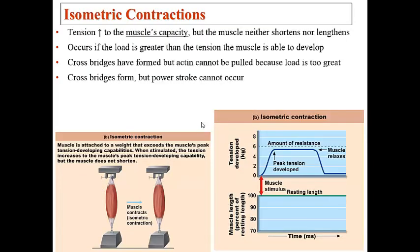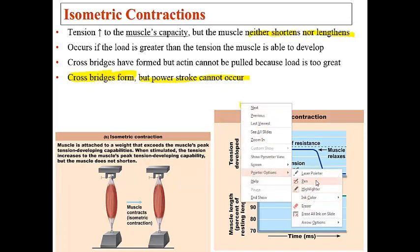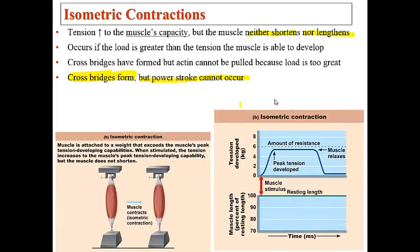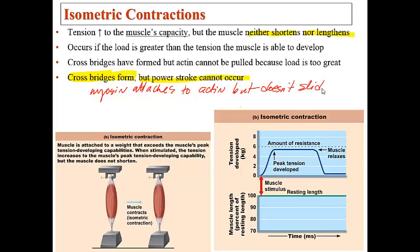Isometric contractions are those where the muscle neither shortens nor lengthens. These occur when crossbridges form but the power stroke does not produce sliding — like the myosin head spinning its wheels. The myosin attaches to the actin but cannot cause filament sliding, so it detaches and tries again repeatedly without moving the load. Holding the arm in one fixed position is an example of an isometric contraction.